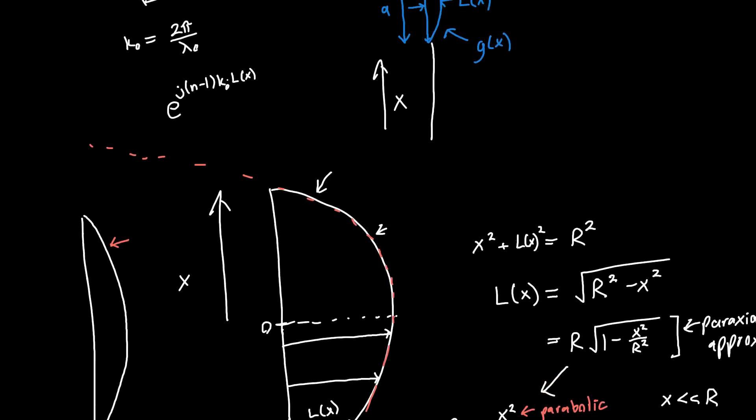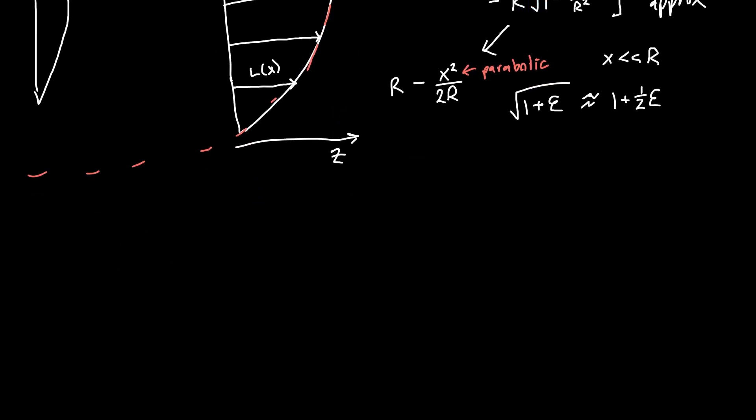Now all we have to do is plug this back into our original equation. If we do that, we'll get e to the j, n minus one, k, and now times l of x, which is just r. I'm going to separate out these exponentials. So now we've got minus j n minus one, k times x squared over two r. We see that this phase or complex exponential is a function of r, but it's not a function of x. So this is just a constant phase delay. This is hardly ever going to matter unless you're doing things like interferometry. So we're going to drop this. We're going to ignore it.